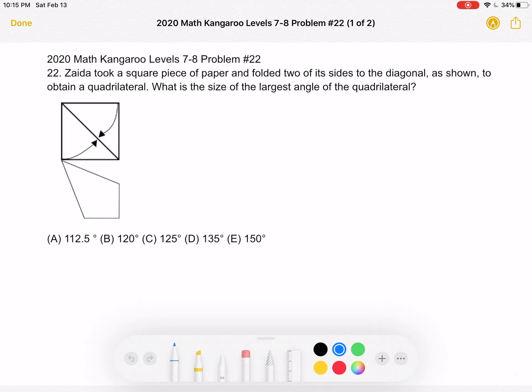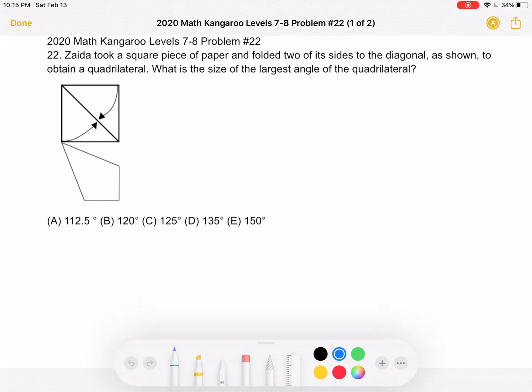A. 112.5 degrees, B. 120 degrees, C. 125 degrees, D. 135 degrees, or E. 150 degrees. This is the problem as it originally appeared on the test, and here is where we'll be doing the solution.